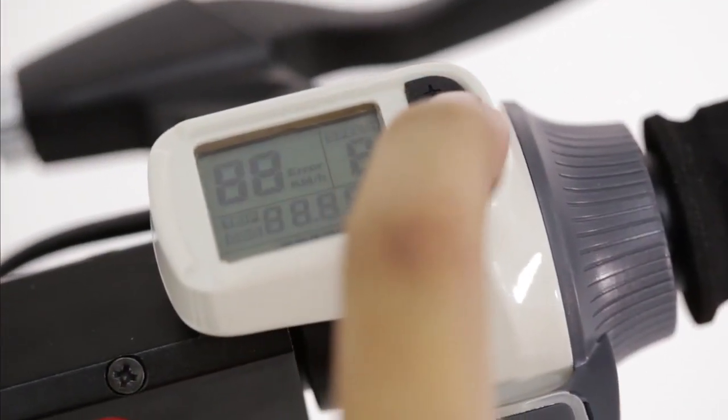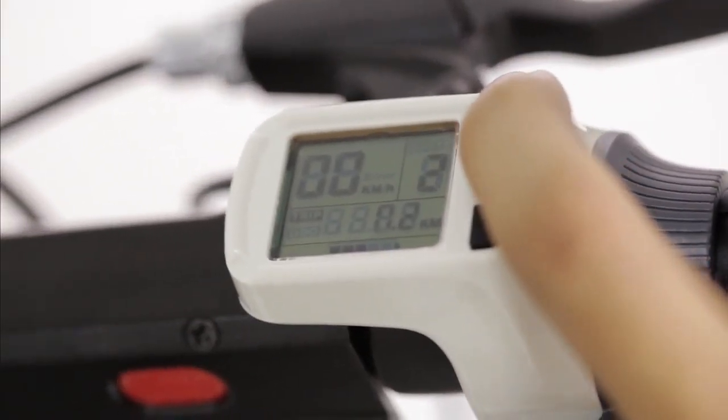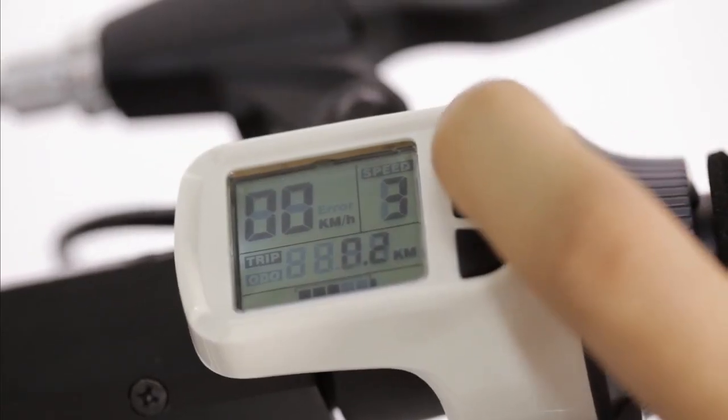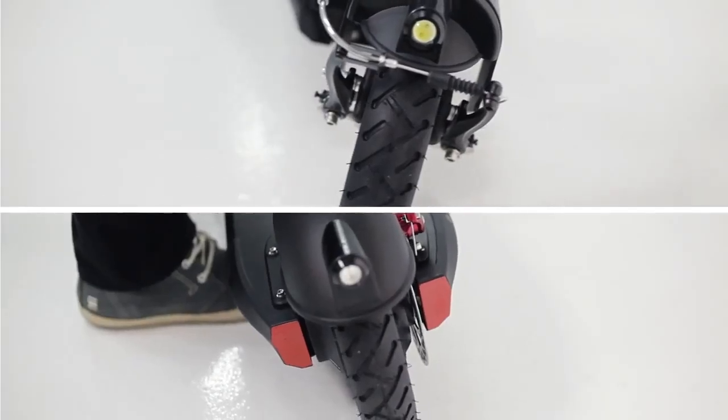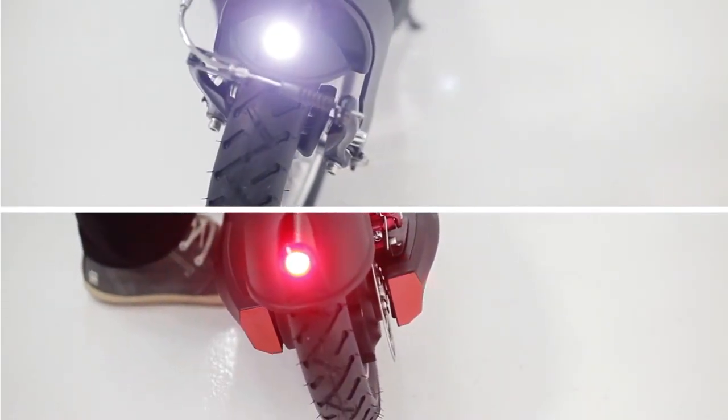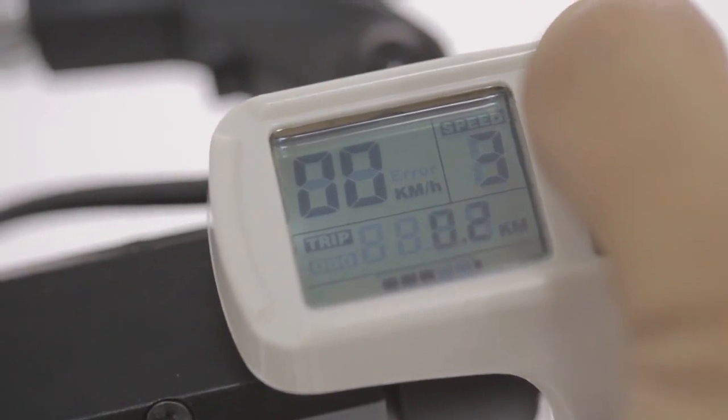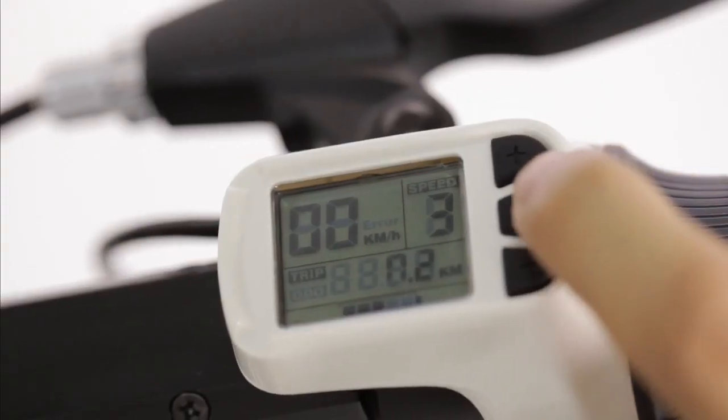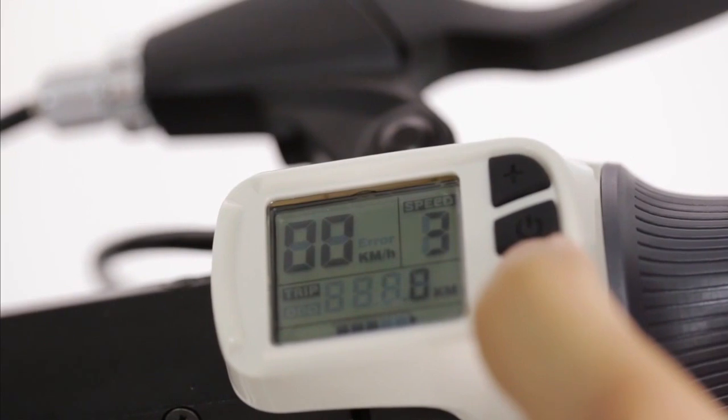Press on the middle button to turn the scooter on. Toggle between the three speeds with the plus and minus buttons. Hold the plus to activate the screen's backlight as well as to keep the scooter's front and rear lights on. Hold again to turn the lights off. Press on the middle button to switch between the odometer and distance traveled per trip. Hold the minus to reset your trip distance meter.